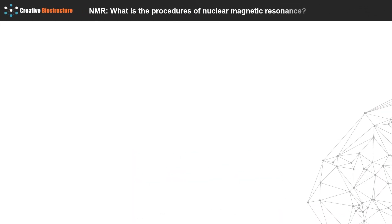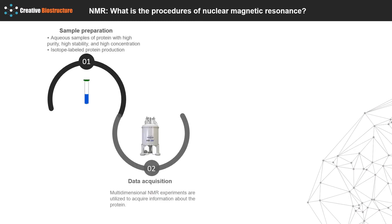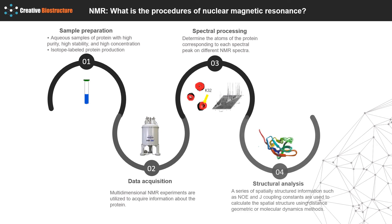There are four main steps in an NMR experiment: sample preparation, data acquisition, spectral processing, and structural analysis. NMR analysis is performed on aqueous samples of protein with high purity, high stability, and high concentration—a sample volume ranging from 300 to 600 microliters with a concentration range of 0.1 to 3 millimolar. The use of stable isotopes for protein labeling can effectively increase signal intensity and resolution. Selective labeling of certain amino acids or chemical groups of proteins can greatly reduce signal overlap.